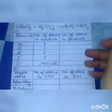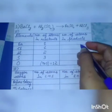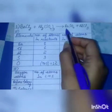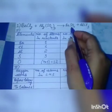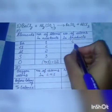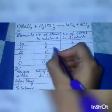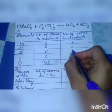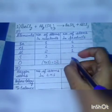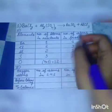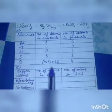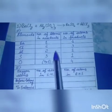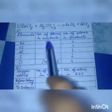So this covers the reactants side. Now we will see what is produced in the product column. Here we can see that only barium has an equal number of atoms on both sides of the equation.